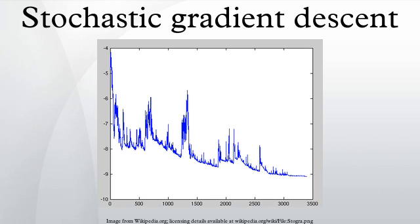Due to the inherently sequential nature of stochastic gradient descent, the algorithm does not readily benefit from being run in parallel or distributed system environments. However, it is a common choice among optimization algorithms in machine learning, and as such there are several variants of SGD which aim to address this.